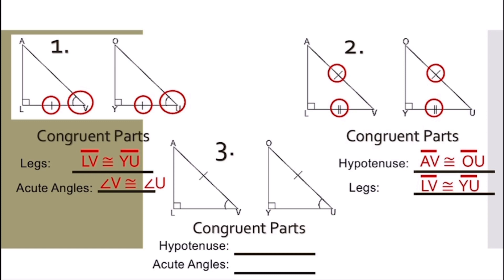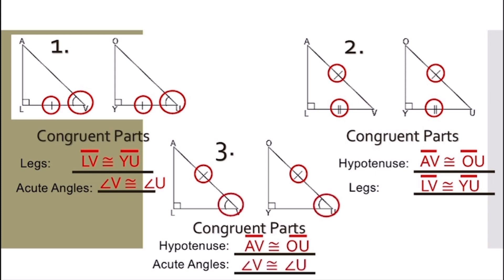For number three, the congruent parts: the hypotenuse is line segment AV is congruent to line segment OU. And for the acute angles, angle V is congruent to angle U.